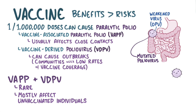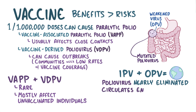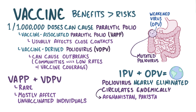In fact, because of IPV and OPV, poliovirus is nearly eliminated worldwide. It only circulates endemically in a few areas within countries like Afghanistan, Pakistan, and Nigeria where there's poor public health and limited vaccine coverage.